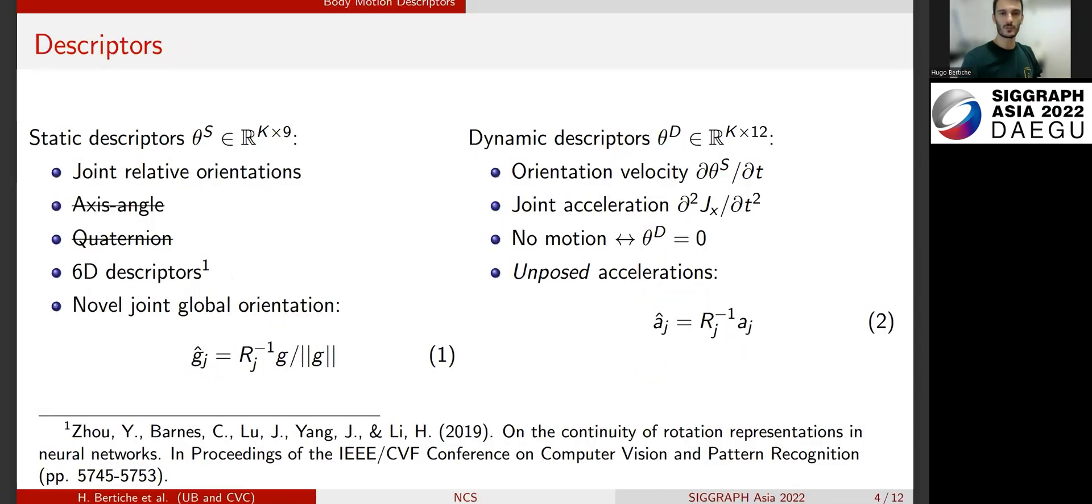First, the input descriptors that we propose for our neural network. On one hand, we have static descriptors. As is common in the literature, we use joint relative orientations. Instead of using axis angle or quaternion representations, we use six-dimensional descriptors. We also propose a novel joint global orientation descriptor, which is the direction of the unposed gravity.